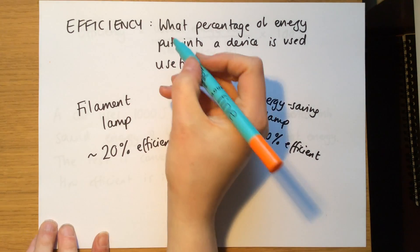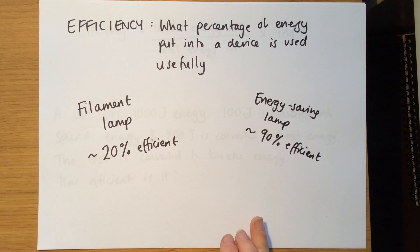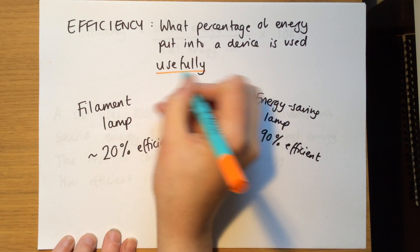Okay, so efficiency tells us what percentage of energy put into a device is used usefully. So you can talk about the efficiency of an engine, or of a kettle, or of a hairdryer, of anything that uses energy, and it tells us how much is used usefully.